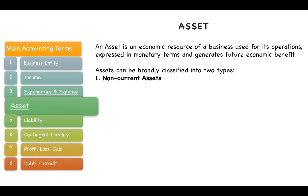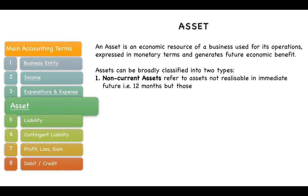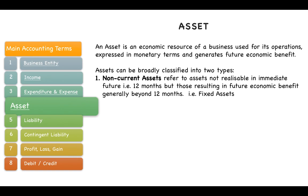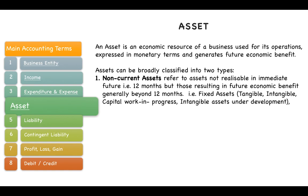The first type is non-current assets, which refer to assets not realizable in the immediate future — that is, within 12 months — but those resulting in future economic benefit generally beyond 12 months. These are fixed assets, which can be tangible or intangible. Tangibles are the ones you can see; intangibles you cannot, like goodwill, software, and capital work in progress.